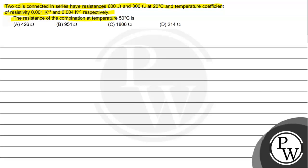We need to find the resistance of the combination at 50 degrees Celsius. The options are: A) 426 ohm, B) 954 ohm, C) 1806 ohm, D) 214 ohms.